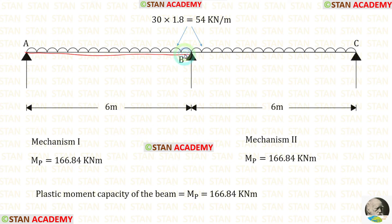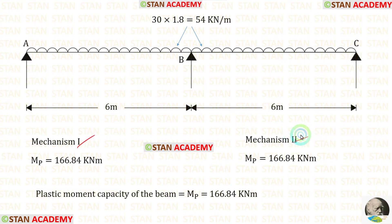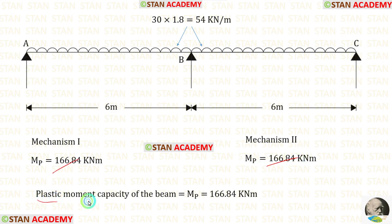In span AB we have completed the first mechanism. Now we need to make the second mechanism in span BC. This beam is symmetrical — it has the same load on the left and right sides. So mechanisms 1 and 2 give the same plastic moment. We take the maximum plastic moment from the mechanisms; in this case both are equal, so the plastic moment capacity of the beam is 166.84 kNm.